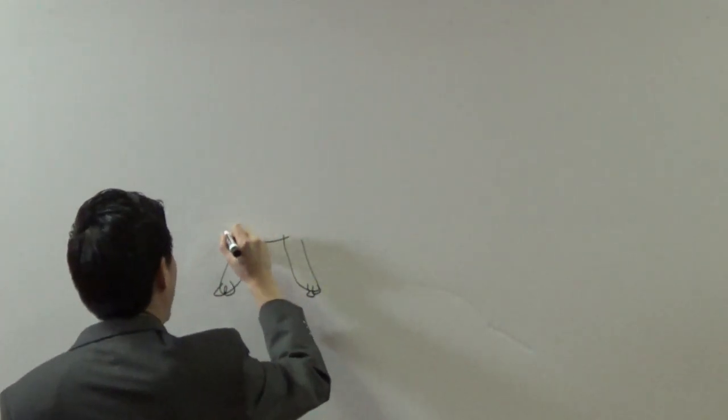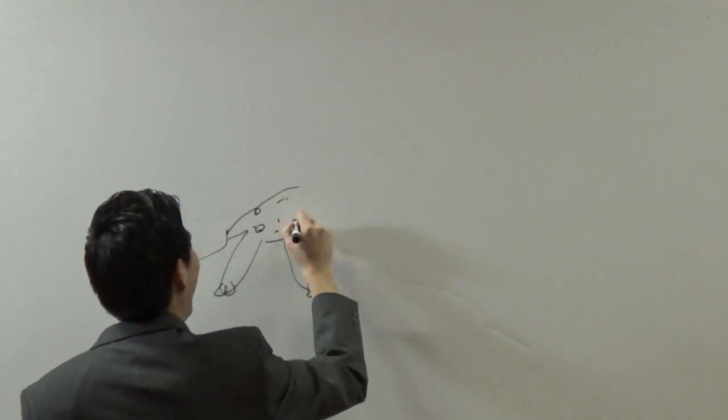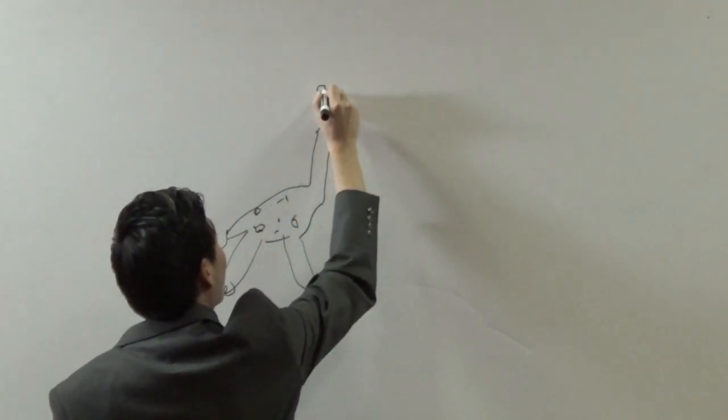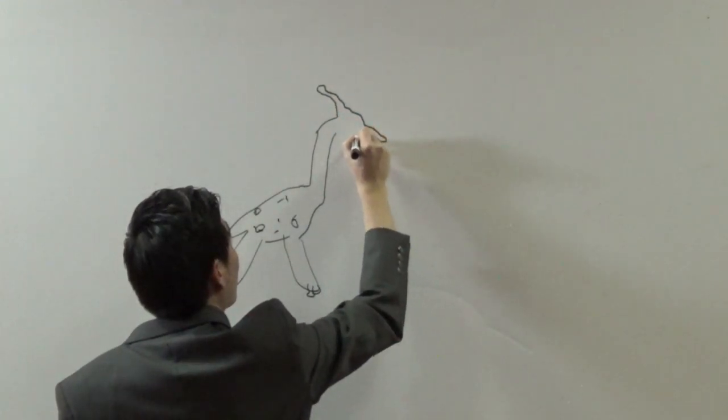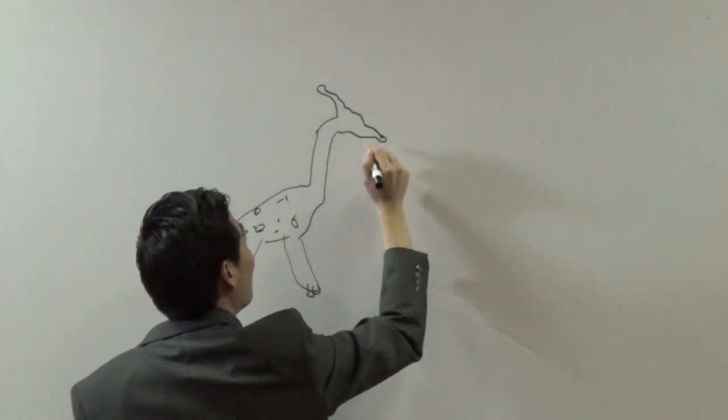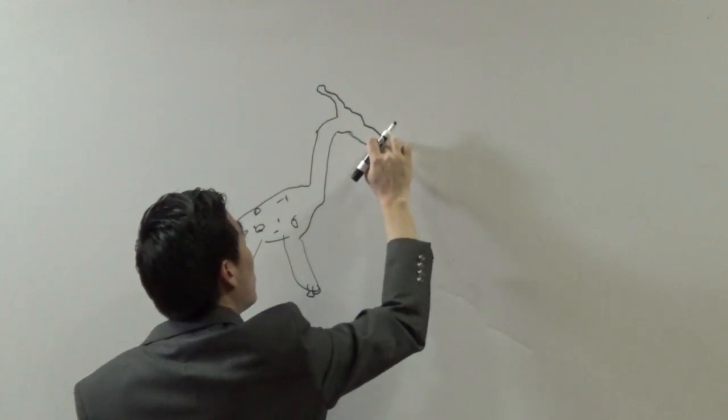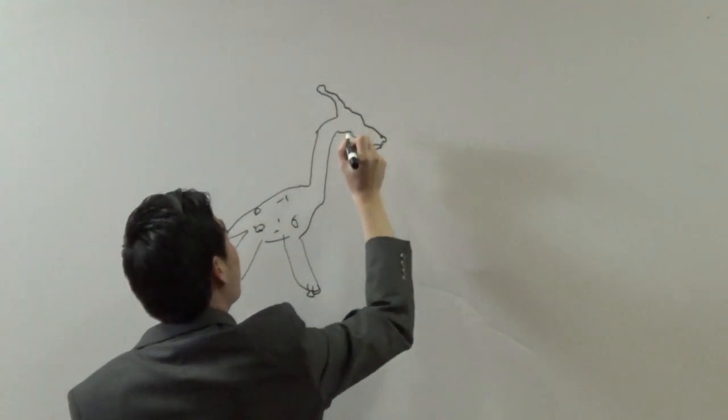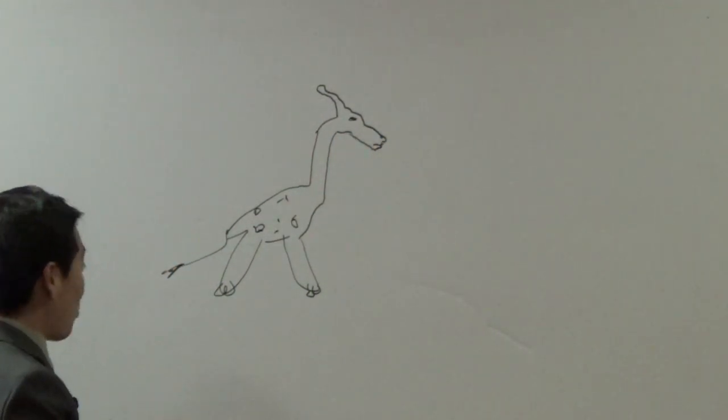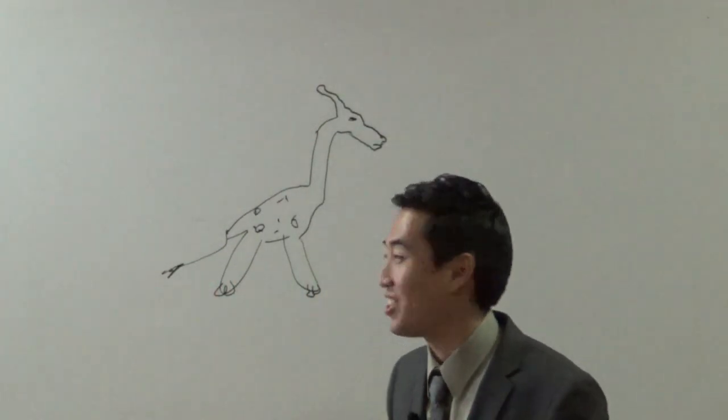And then with this giraffe right here, you've got some spots on him, right? Something like that. Got a long neck right here. It's kind of a skinny snout, but oh well. All right. But anyways, with this giraffe right here, so with this giraffe or this Nephilim that I just drew, this weird little creature that I just drew.